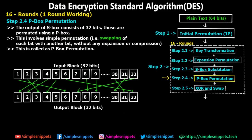Step 2.4 is P-box permutation. The output of the S-boxes consists of 32 bits, and these are permuted using a P-box. This involves simple permutation — swapping each bit with another bit — without any expansion or compression, so the input is 32 bits and the output is also 32 bits, but with bit positions swapped according to a predefined set of swapping instructions.